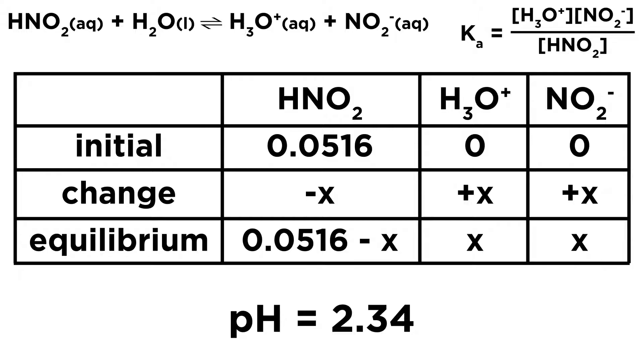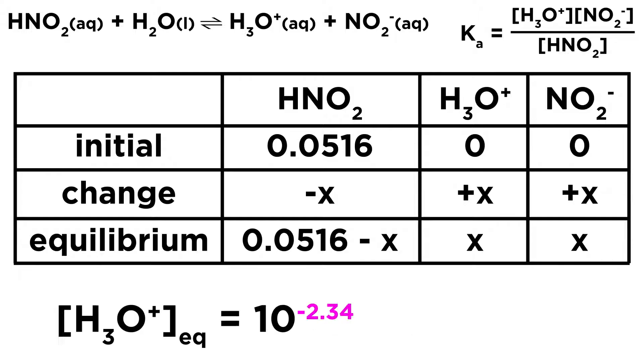We know that the pH of the solution is 2.34. Well, what is pH? pH is just a way of measuring hydronium concentration, specifically the hydronium concentration once equilibrium has been reached. And so we know that the hydronium concentration at equilibrium is 10 to the negative pH, or 10 to the negative 2.34. And so therefore, we know that the hydronium concentration at equilibrium is 0.0046 molar.